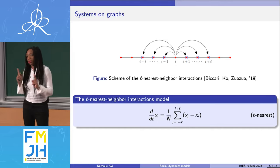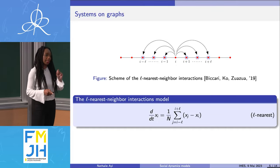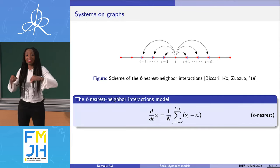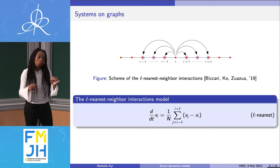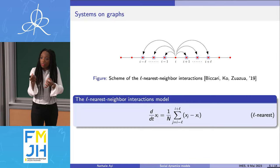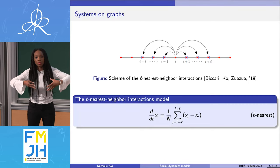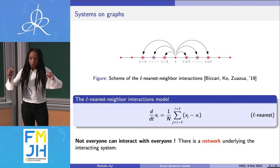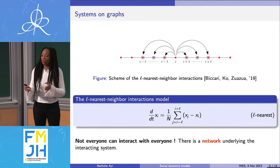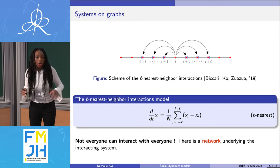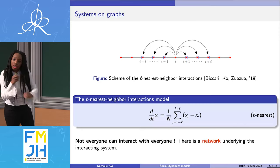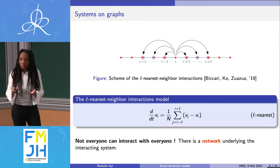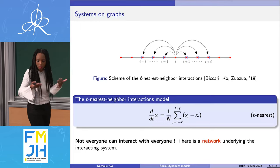This is significantly different from what I described before. In the previous case, everyone was able to interact with everyone — the only thing that mattered was the distance between two opinions. This is different here: two agents can have the same opinion, but if they were not seated close to each other initially, they cannot interact. So not everyone can interact with everyone. There is a network, a graph underlying the system, that describes which interactions are possible or not. This is how graphs naturally appear.